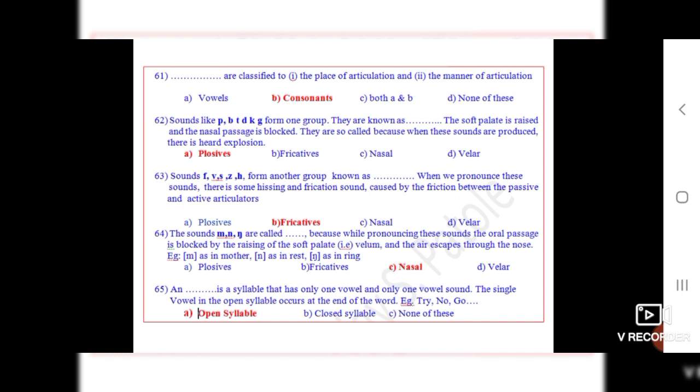Question 63: Sounds F, V, S, Z, H form another group known as dot dot dot. When we pronounce these sounds, there is some hissing and friction sound caused by the friction between the passive and active articulators. The correct option is B, fricatives.